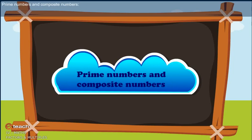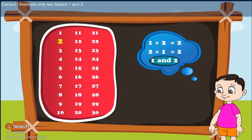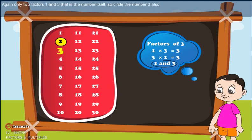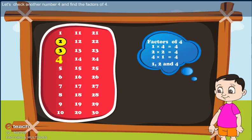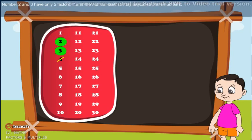Prime numbers and composite numbers. Starting from 2 — can you tell the factors of 2? Correct, only 2 factors: 1 and 2. Now check the next number 3 and find the factors of 3. Again, only 2 factors: 1 and 3, that is, 1 and the number itself. So circle the number 3 also. Let's check another number 4 and find the factors of 4. Number 4 has 3 factors, so we will not circle the number 4 — instead, we cross out the number 4.